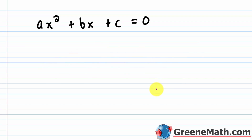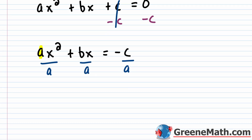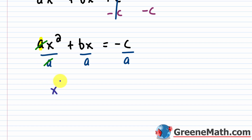The first step is to move all variable terms to one side and constants to the other. We subtract c from each side, giving us ax² + bx = −c. When you complete the square, you want the coefficient of x² to be 1. So we divide everything by a, giving us x² + (b/a)x = −c/a.